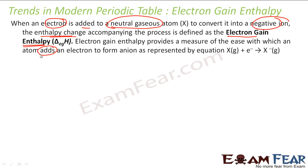Note that in the earlier case, ionization enthalpy provides the ease with which an electron can be removed from an atom. In this case, electron gain enthalpy provides the ease with which an electron can be added to an atom to form an ion.